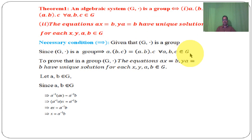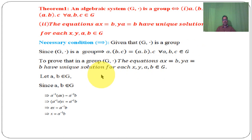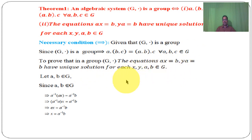We have to prove that in a group G dot, the equations AX equal to B and YA equal to B have a unique solution for each X, Y, A, B belongs to G.